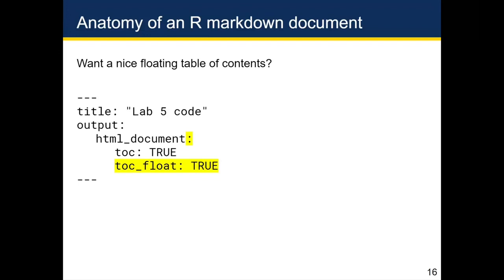There are also other options you can specify, such as toc underscore float set to true. That adds a floating table of contents so that when you scroll down in your document, it highlights where you are in the table of contents. You can also click entries in the floating TOC to navigate to different parts of your document.